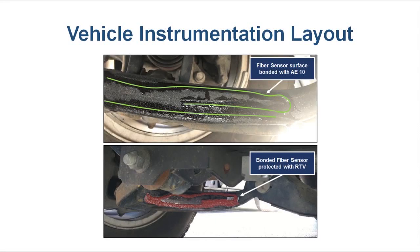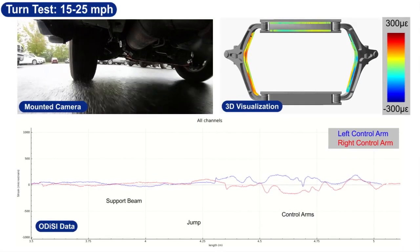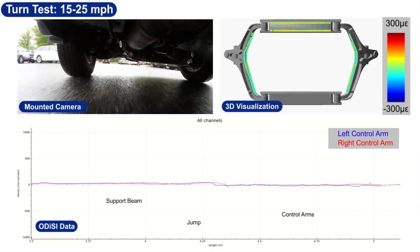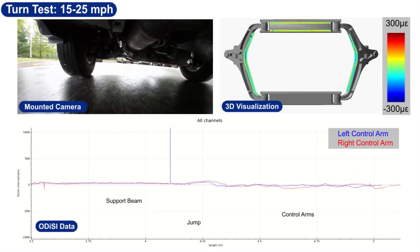Tests conducted while monitoring the strain on the inside surface of both lower control arms at the front of a vehicle. As the vehicle turned, the leading control arm experienced tension as the load shifted to the trailing control arm, which experienced compression.